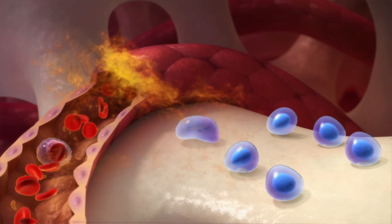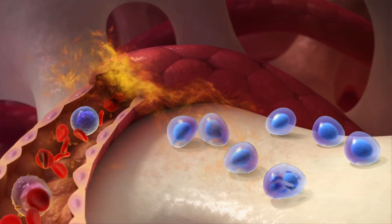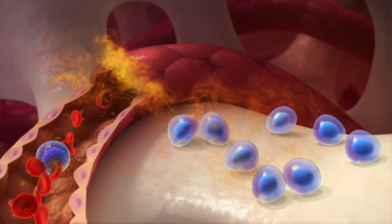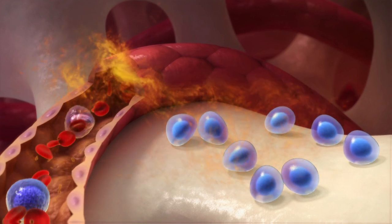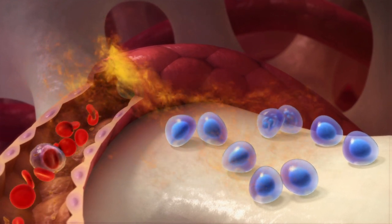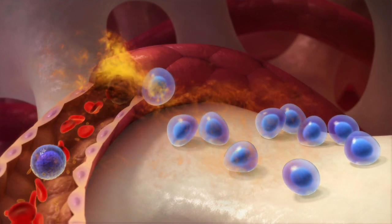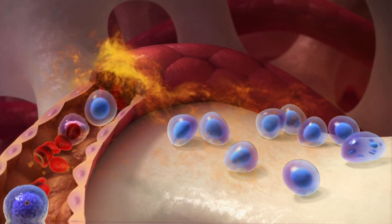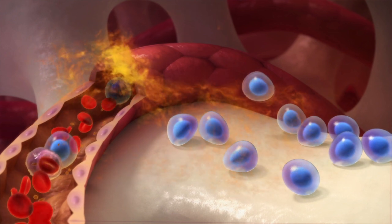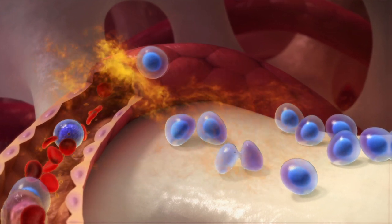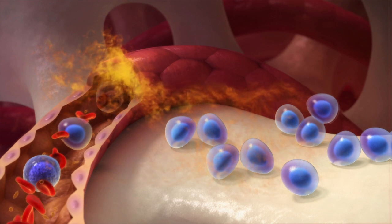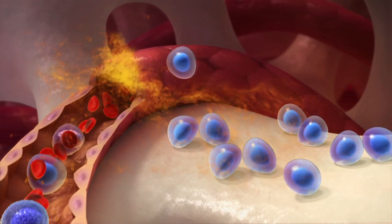This consists of injections of the growth factor G-CSF, and sometimes also an injection of cyclophosphamide. These drugs increase the number of stem cells in your bone marrow, causing them to spill over into the blood where they can be collected easily. If you are having difficulty mobilizing stem cells, you may be given another drug called plerixafor.